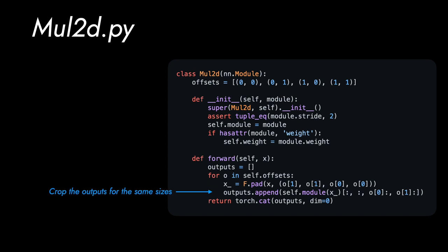Then we crop the outputs for the same sizes. This might be changed appropriately for the different kernel size of module.